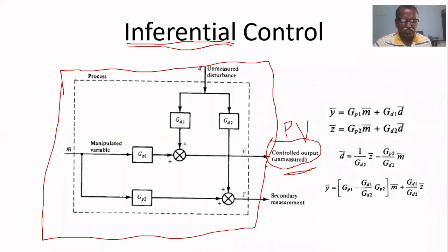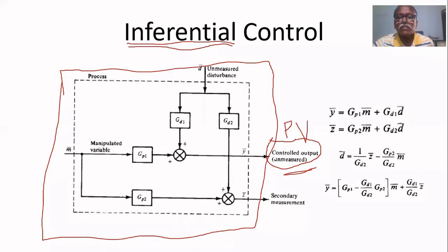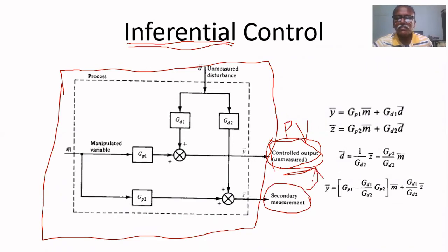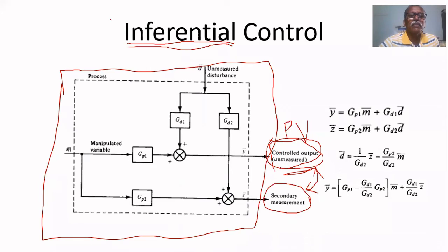Similarly, in this process, it is not possible to measure the process variable directly. But we can measure another variable, called the secondary measurement, which has a good relationship with the process variable and can be measured. In that case, we measure this secondary variable and control the process — that is called inferential control.